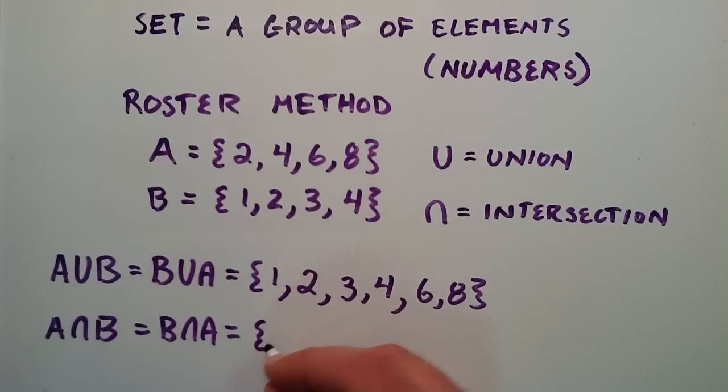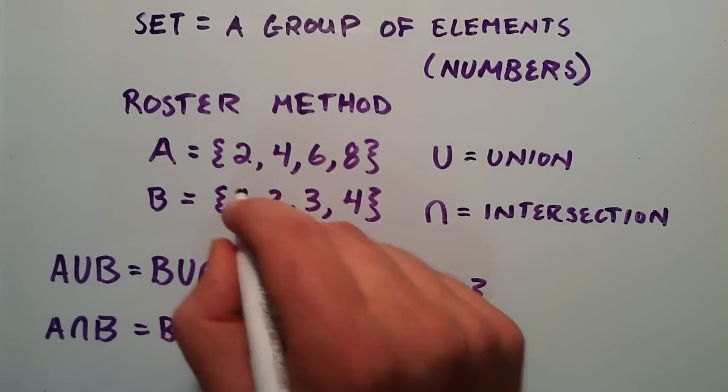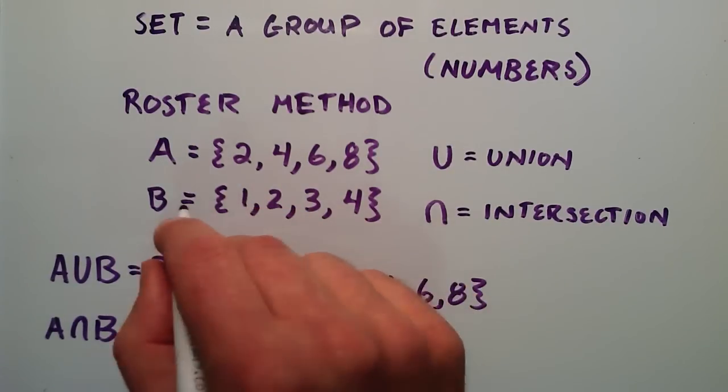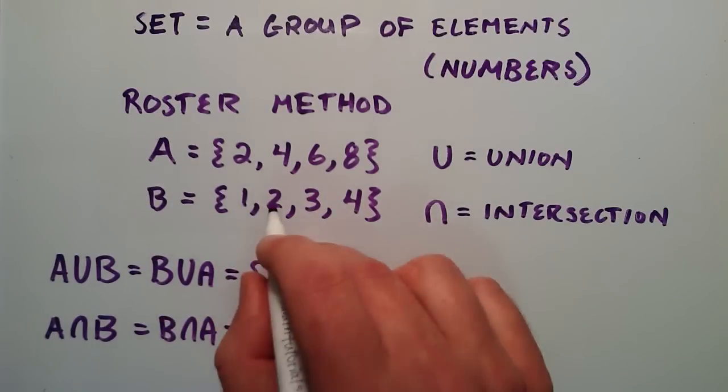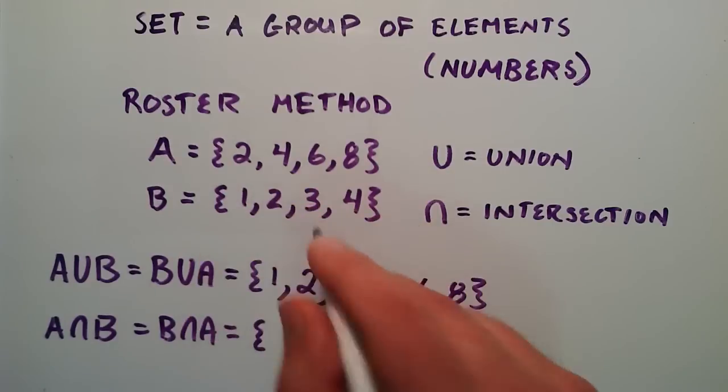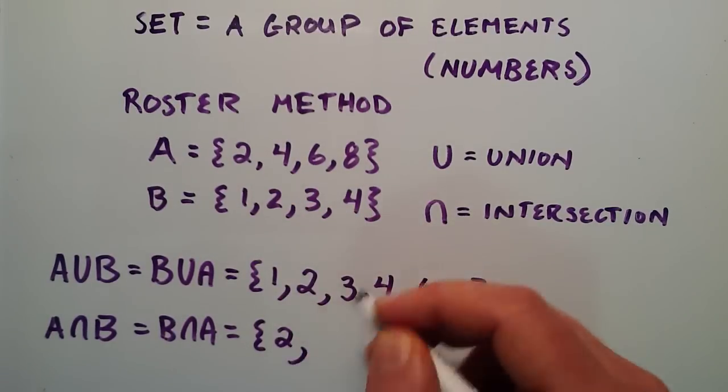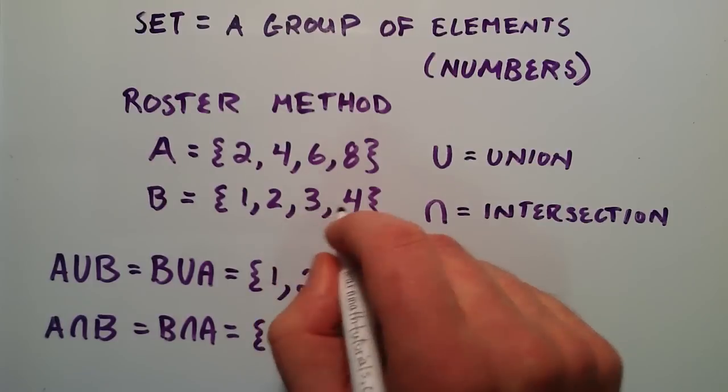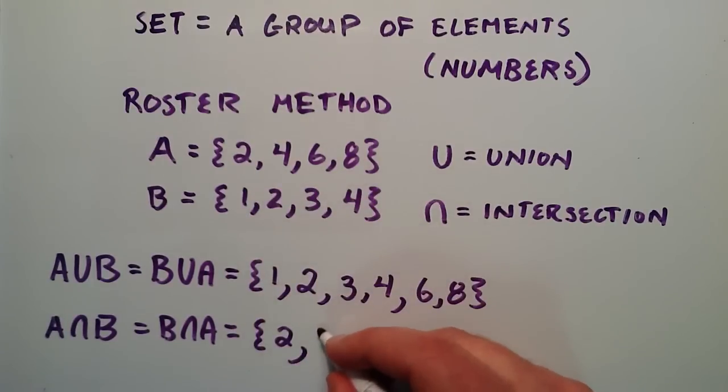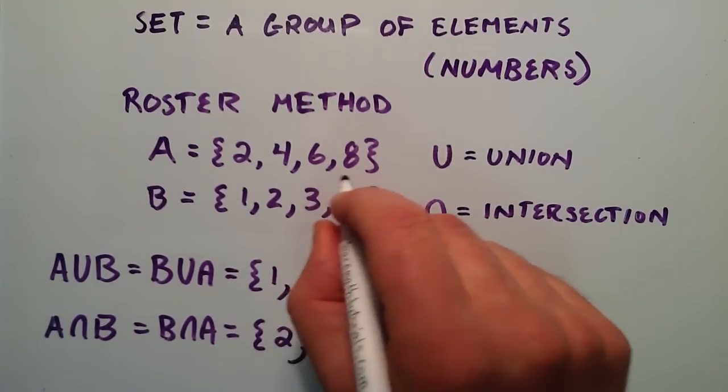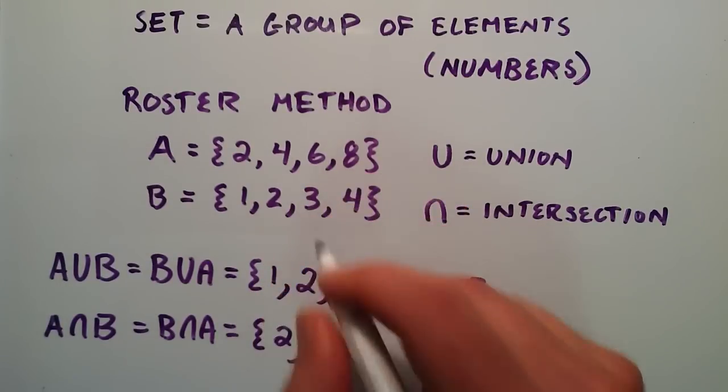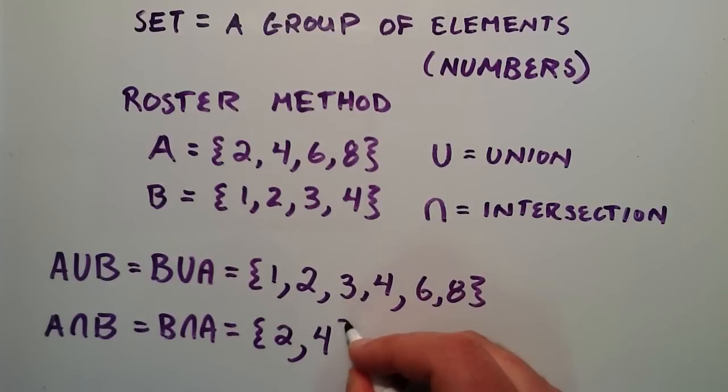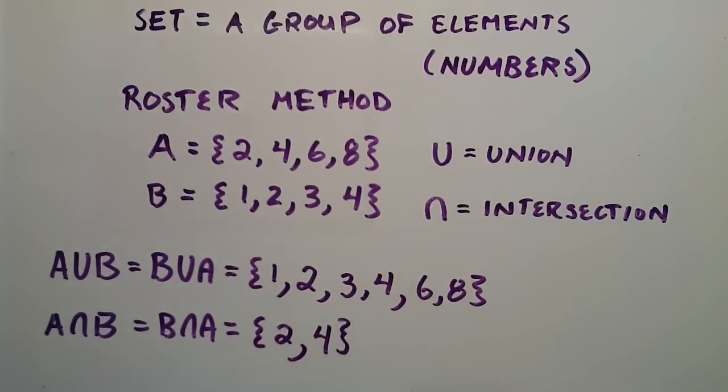It's another set here. We'll just put curly braces. 1 only exists in set B but not in A, so we don't include that in our intersection. 2, on the other hand, is in both sets. So since it's in both sets, we write the 2 down. 3 only is in B. 4 is in both, so we go ahead and write the 4 down. And 6 and 8 are only in set A but not in B. So we just go ahead and close our set here with the closing curly brace.